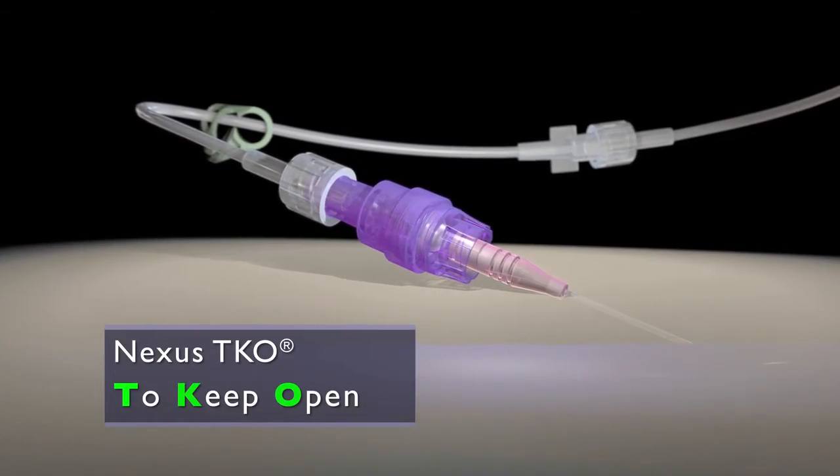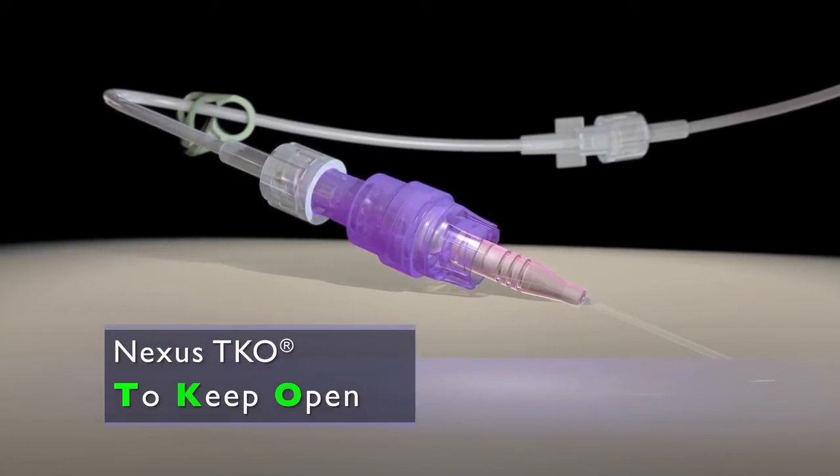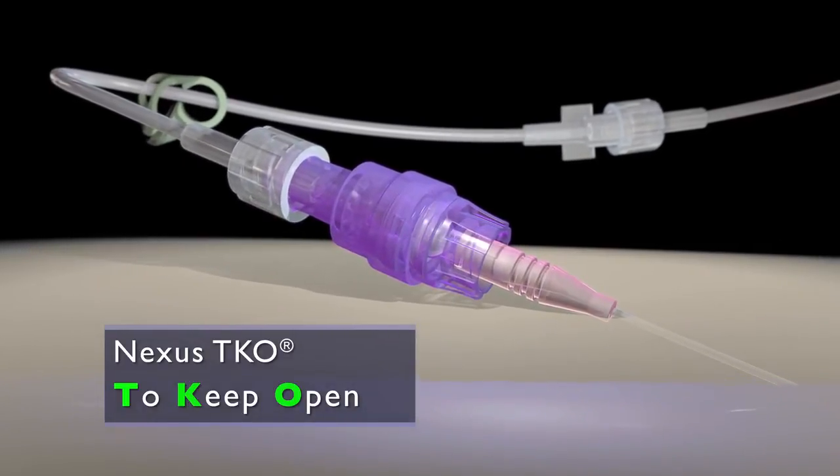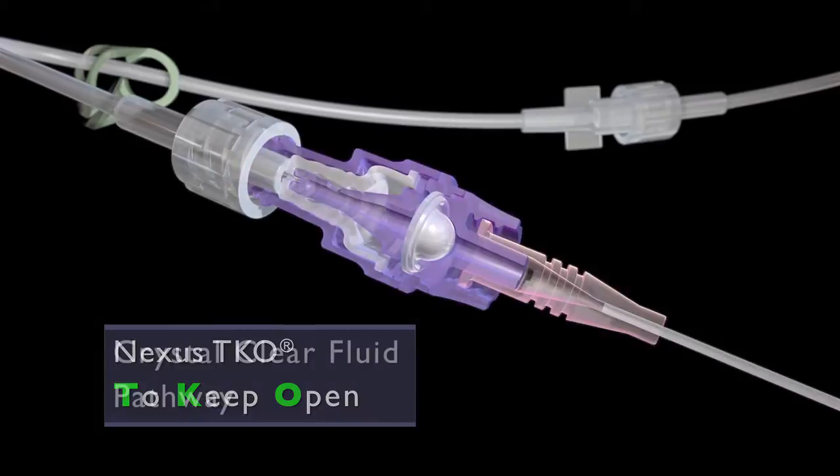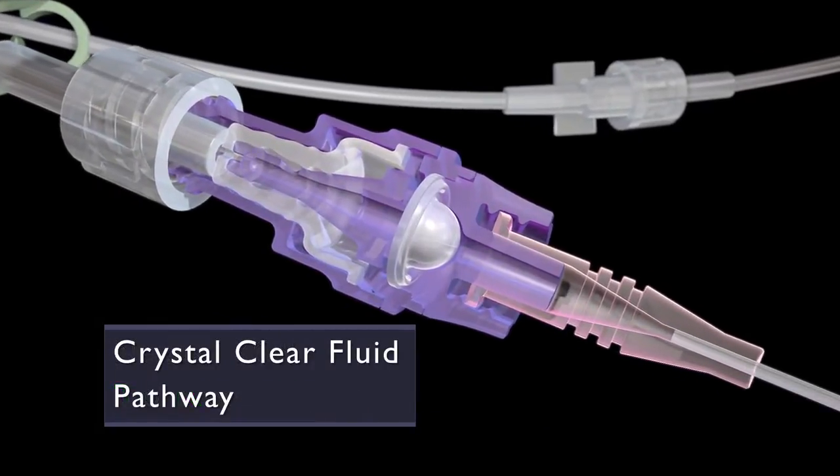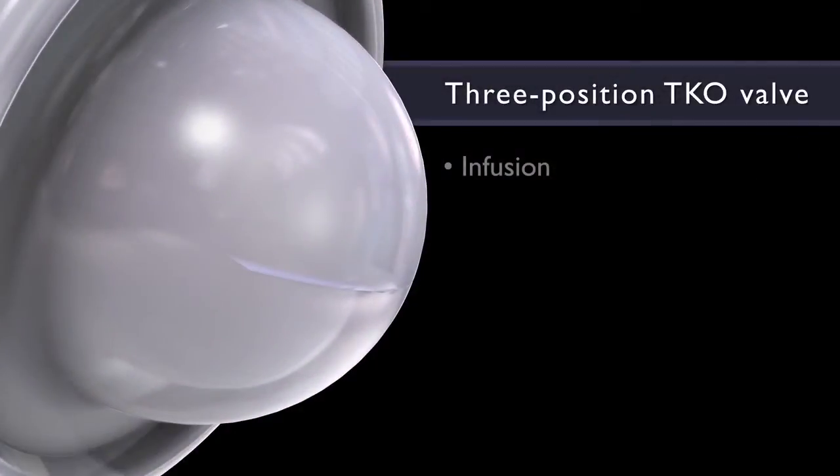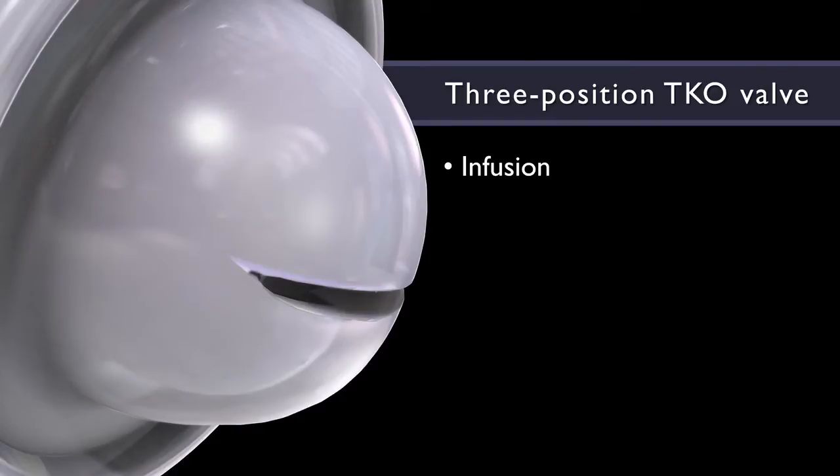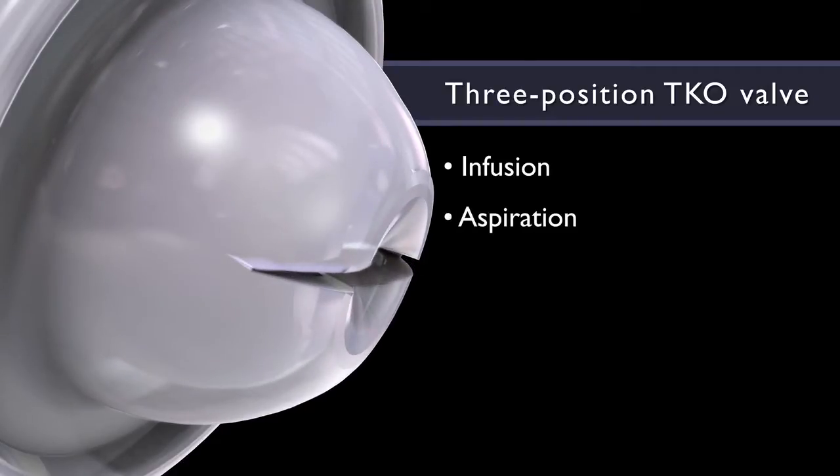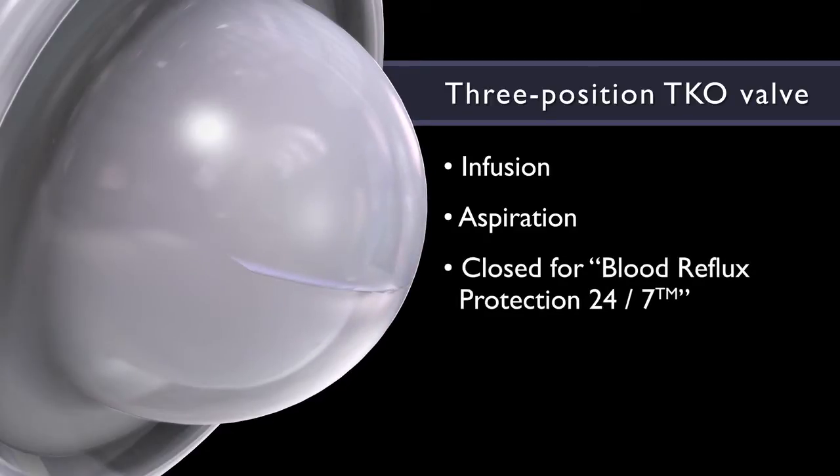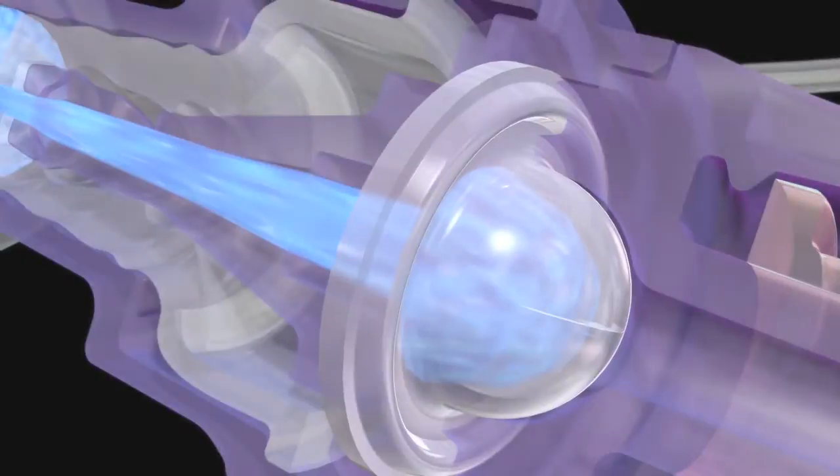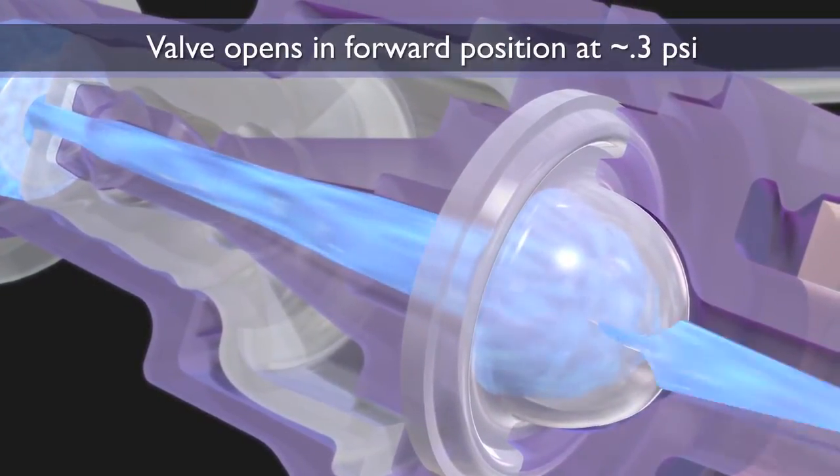Nexus TKO anti-reflux technology simplifies the complexity of IV therapy by maintaining IV catheter patency. The three-position, pressure-activated TKO valve was designed to reduce catheter occlusions by preventing unintentional blood reflux. The crystal-clear TKO valve opens in the forward position for infusion and opens in the reverse position for aspiration.